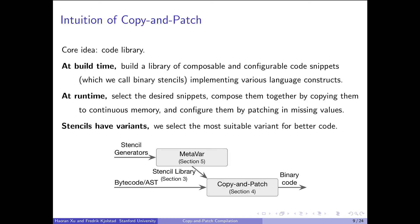So how does our approach work? The core idea is that we have a code library built at application build time. At build time, we build a library of composable and configurable code snippets — which we call binary stencils — that implement different language constructs. At runtime, we select the desired snippets and compose them together by copying them to contiguous memory and then patching in the missing values. There are many different variants that perform the same functionality, so we do optimization by selecting different variants.